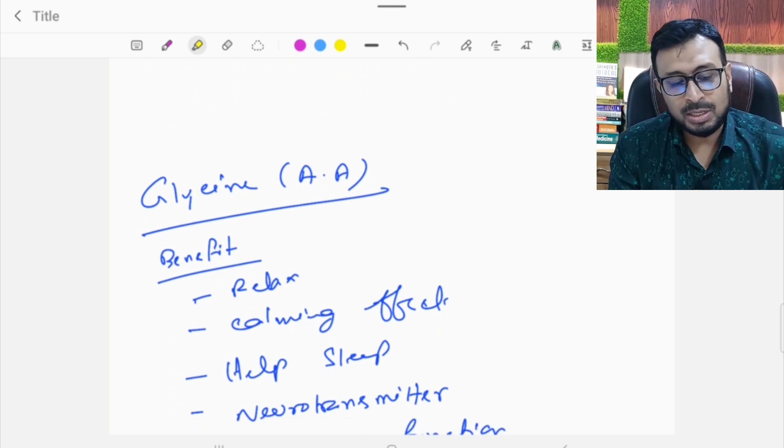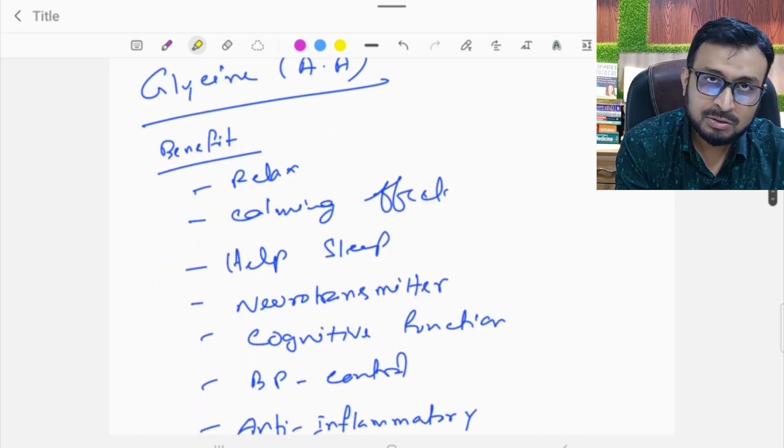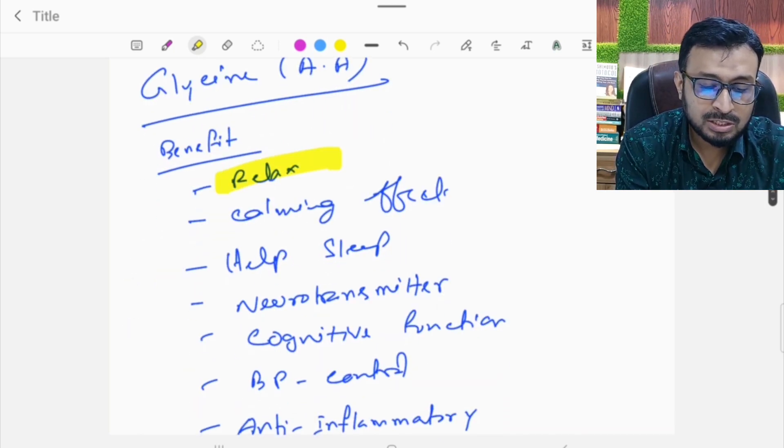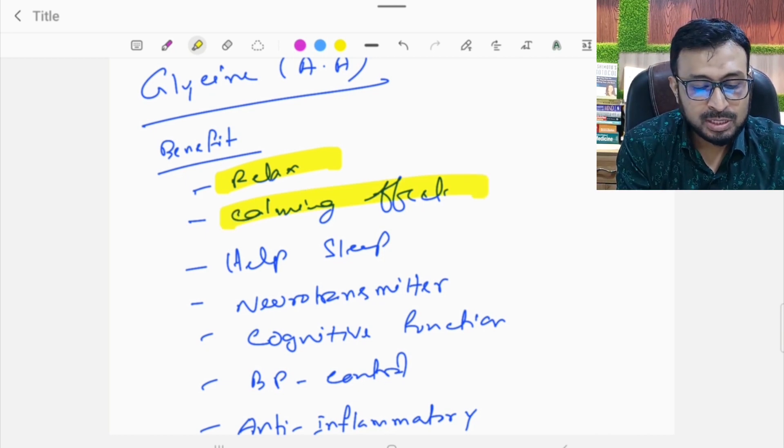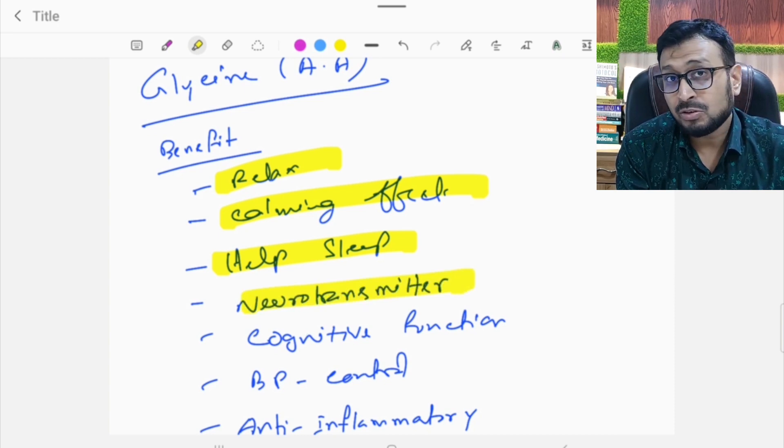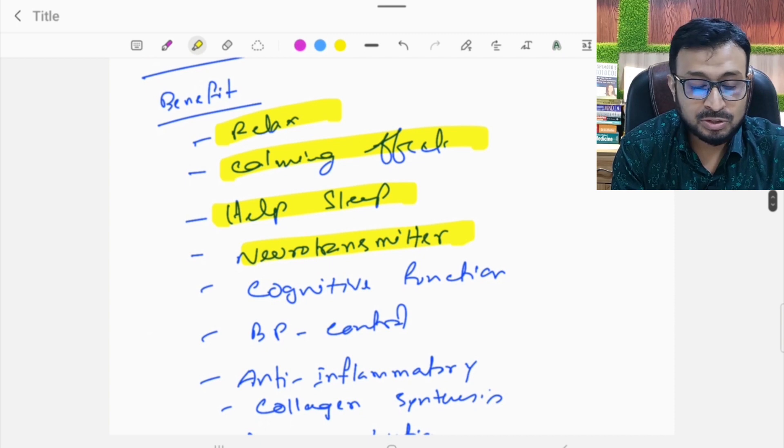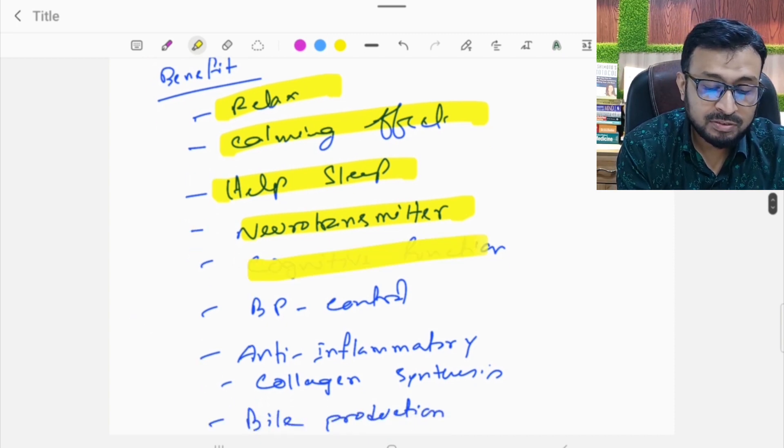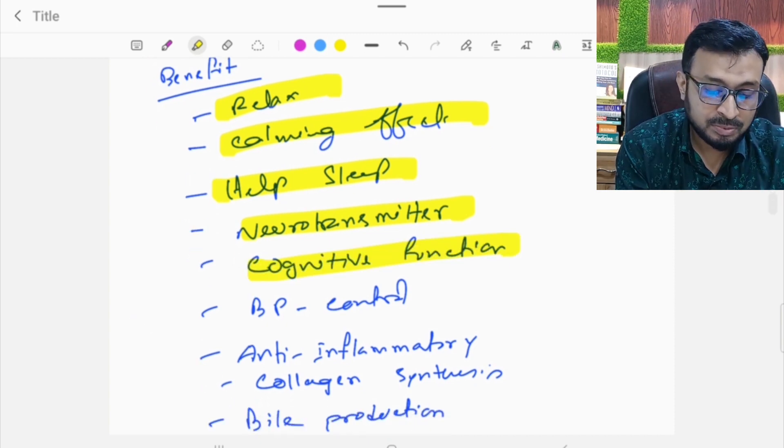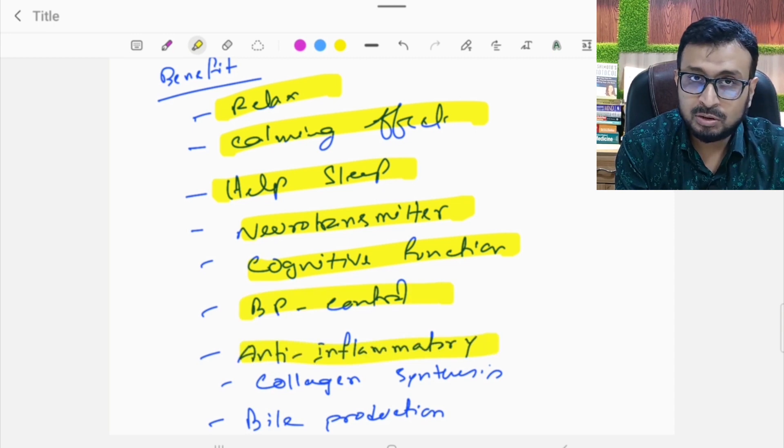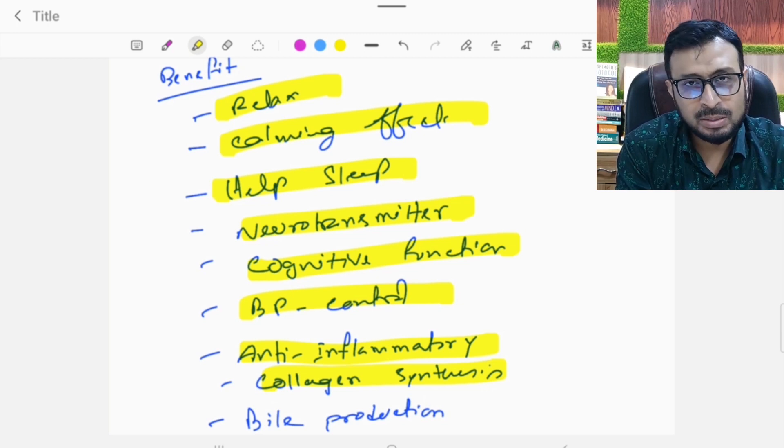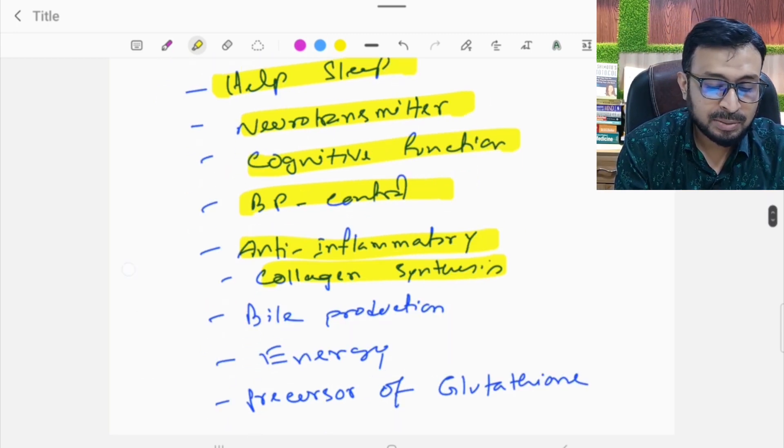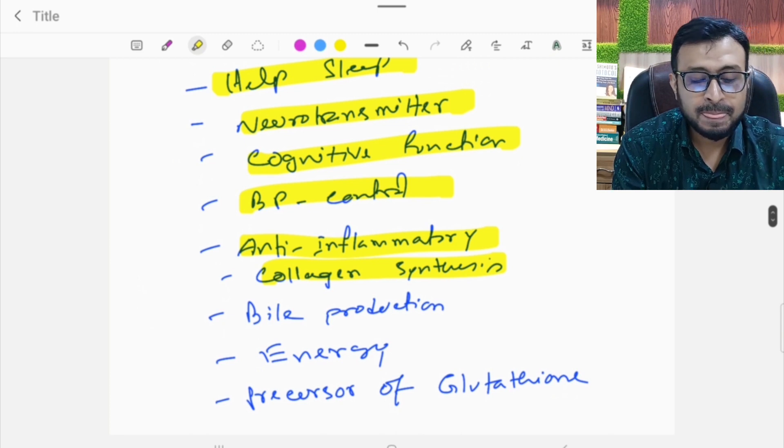There are benefits from magnesium glycinate. It has promising effects on blood health. It helps release neurotransmitters like dopamine and serotonin. It supports cognitive function and brain health. It has anti-inflammatory effects and promotes collagen synthesis. Without collagen synthesis, you get joint pain, poor gut health, and poor skin health.